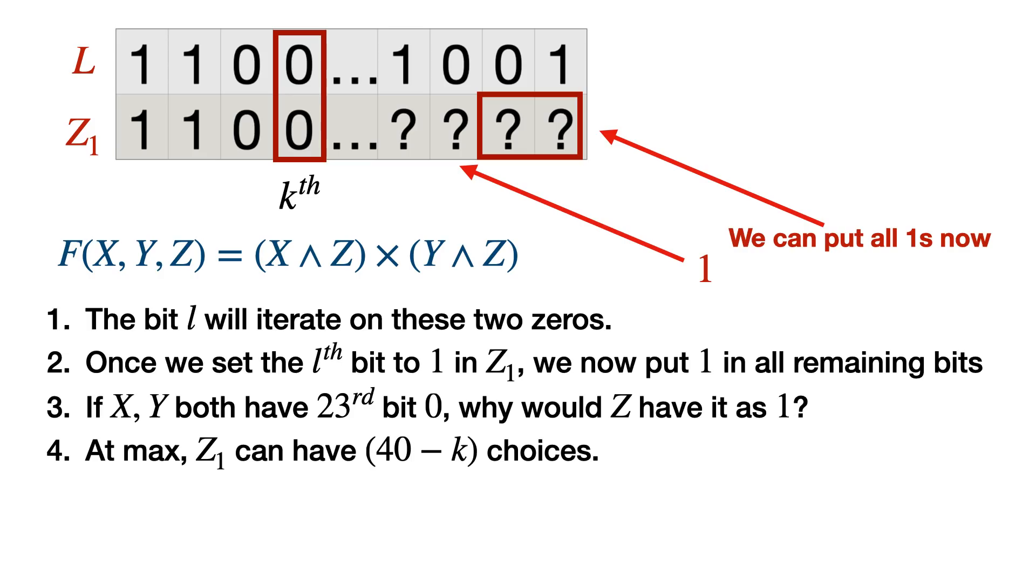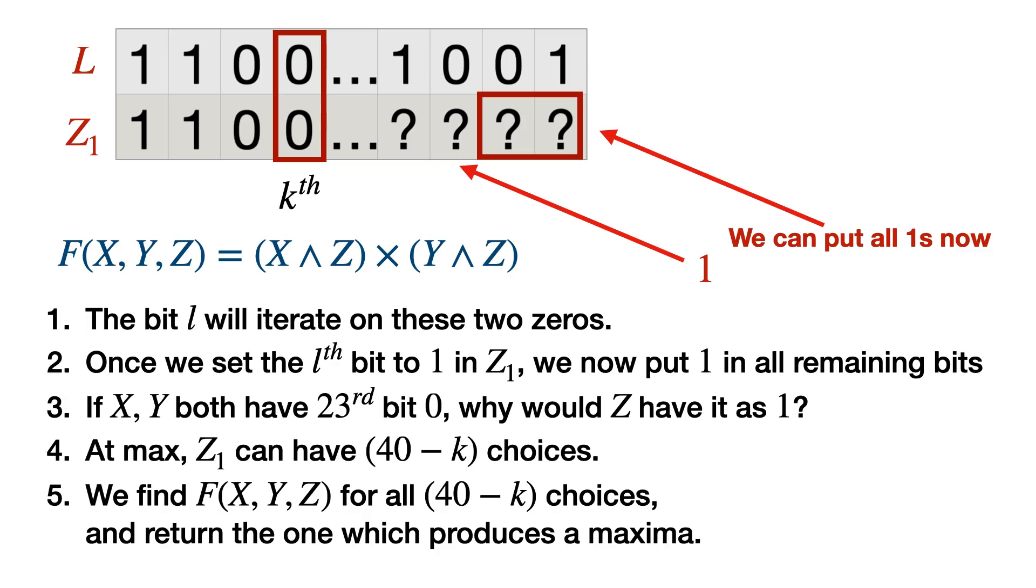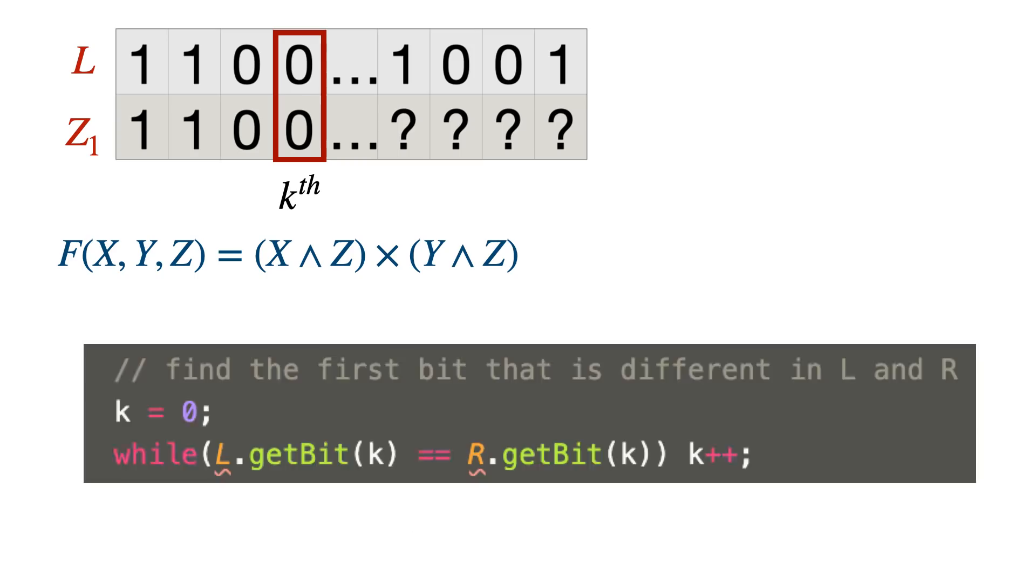This L can iterate at max over 40 minus k zero positions in L. The first k bits are set for Z1 and the remaining bits we are iterating on those positions where L is having a zero. At max, we know that there were 40 bits in L. In worst case, you can iterate on 40 bit positions. From a trillion numbers, you came down to just 40 numbers. You can easily compare that and pick the Z which gives you the maxima. Just 40 numbers for the case of Z1 and L, and the remaining 40 numbers can come from Z2 and R comparison.